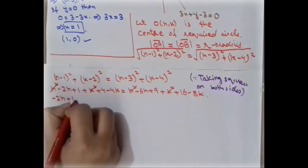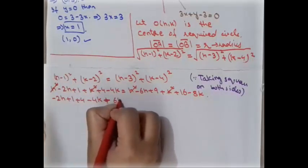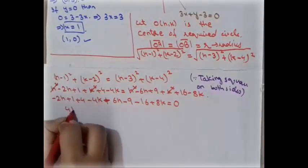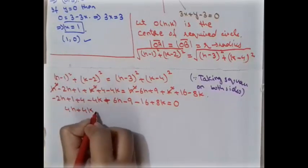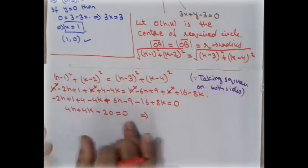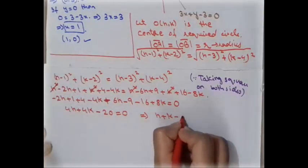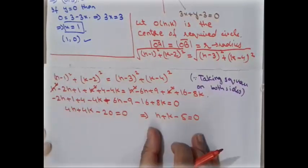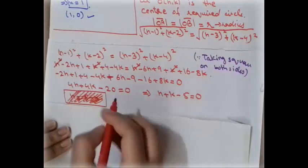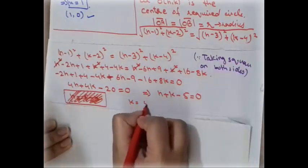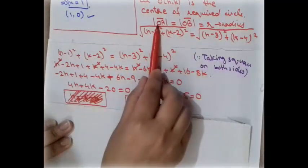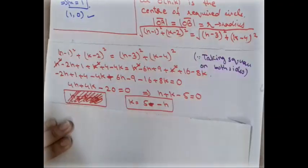Cancelling like terms and taking remaining terms to one side: −2h + 1 + 4 − 4k + 6h − 9 − 16 + 8k = 0, which gives 4h + 4k − 20 = 0. Dividing by 4: h + k − 5 = 0. So k = 5 − h.